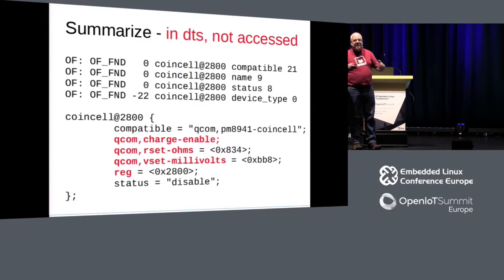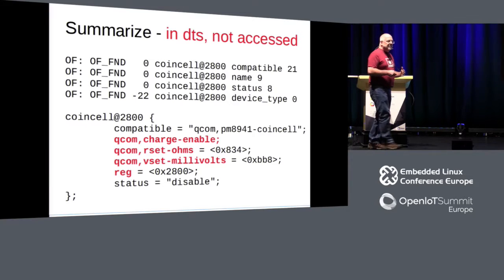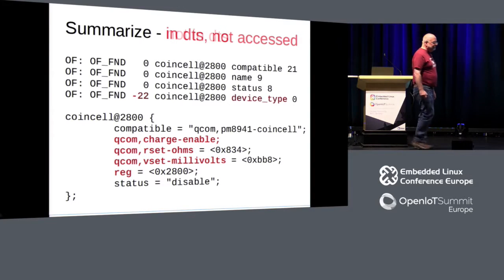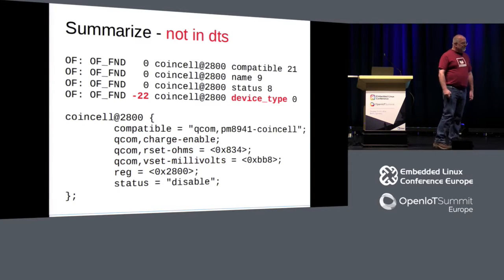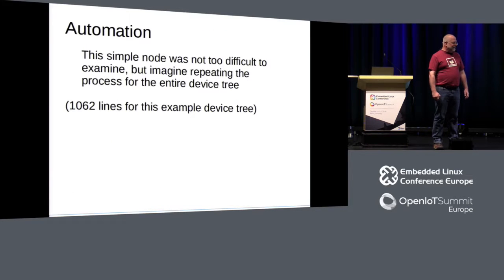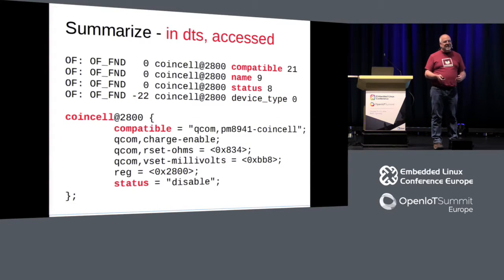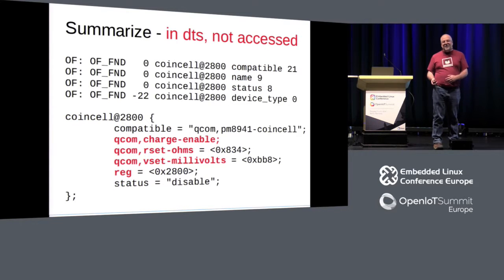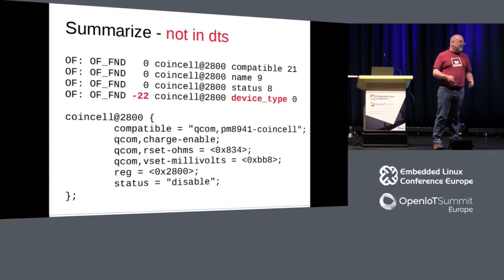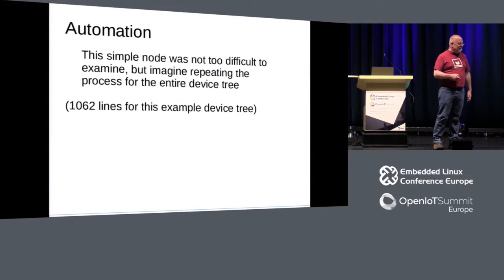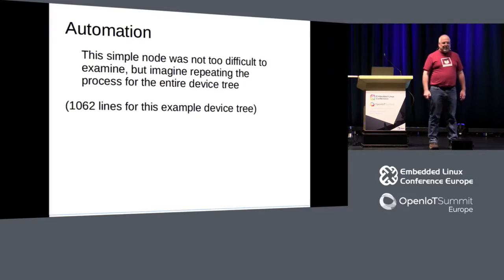When you put all those pieces together, the picture should make sense. There are three categories: what's in the DTS and actually got accessed by the kernel; what's in the DTS but the kernel failed to access; and what did the kernel try to access that's not in the DTS. That wasn't too hard — it all fit on one slide. But imagine if you had an entire device tree of over a thousand lines.